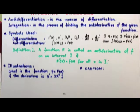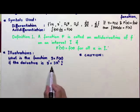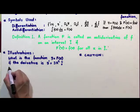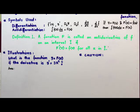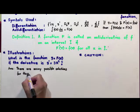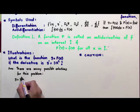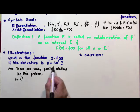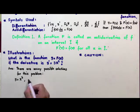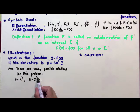To illustrate: what is the function y = F(x) if the derivative of this function is 3x²? There are many possible solutions. One possible solution is y = x³, because the derivative of x³ is 3x². Another possibility is y = x³ + 1, because the derivative of x³ is 3x² and the derivative of the constant 1 is 0.